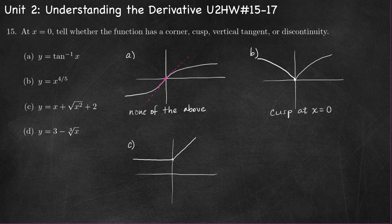We do not have a vertical tangent. We don't have a cusp because the slope isn't approaching infinity or negative infinity on either side. This is a corner — we have a sharp turning point here, a corner point. So there's a corner at x equals zero.